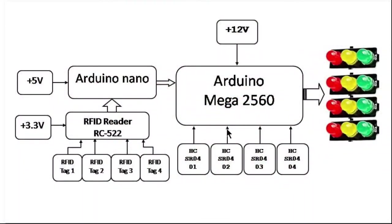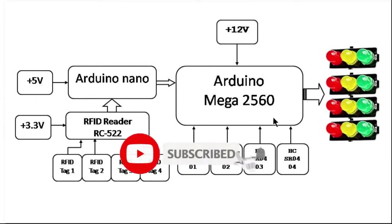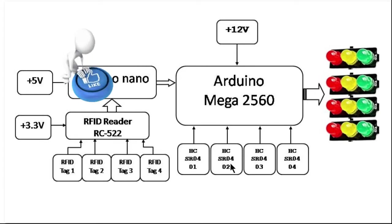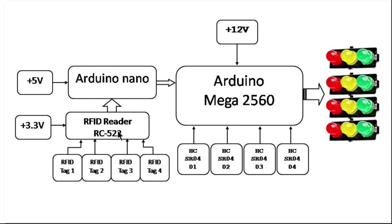In this project we used Arduino Mega 2560 as the heart of the system, with other interfacing devices like LEDs as signal lights, ultrasonic sensors HC-SR04 — four of them — to sense the density of vehicles on the road, and finally an RFID reader RC522 along with RFID tags for emergency vehicles. Additionally, an Arduino Nano is used to interface the RFID reader.